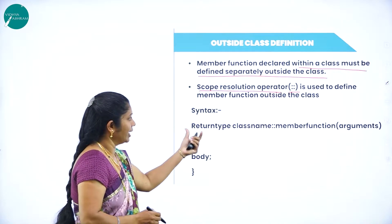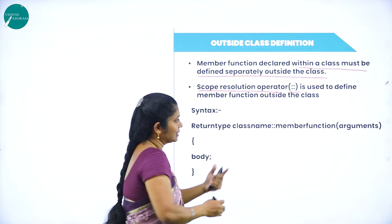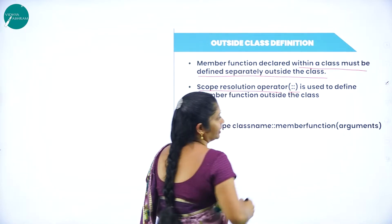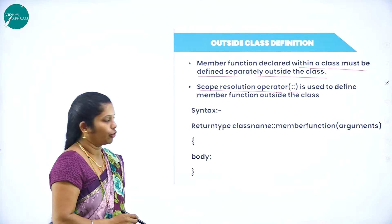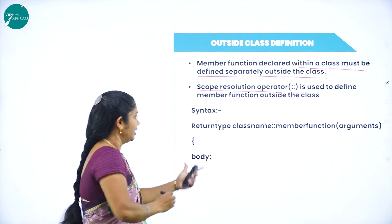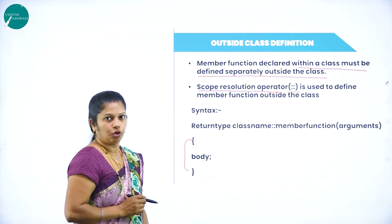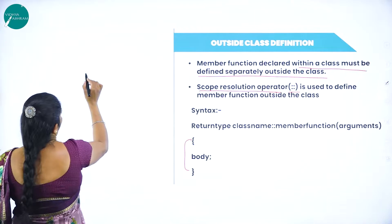It uses the scope resolution operator to define the member function outside the class. If you observe this syntax: return type, then class name, scope resolution operator, member function, then argument, then here we have the body, and we close it. That I will show with one more example.